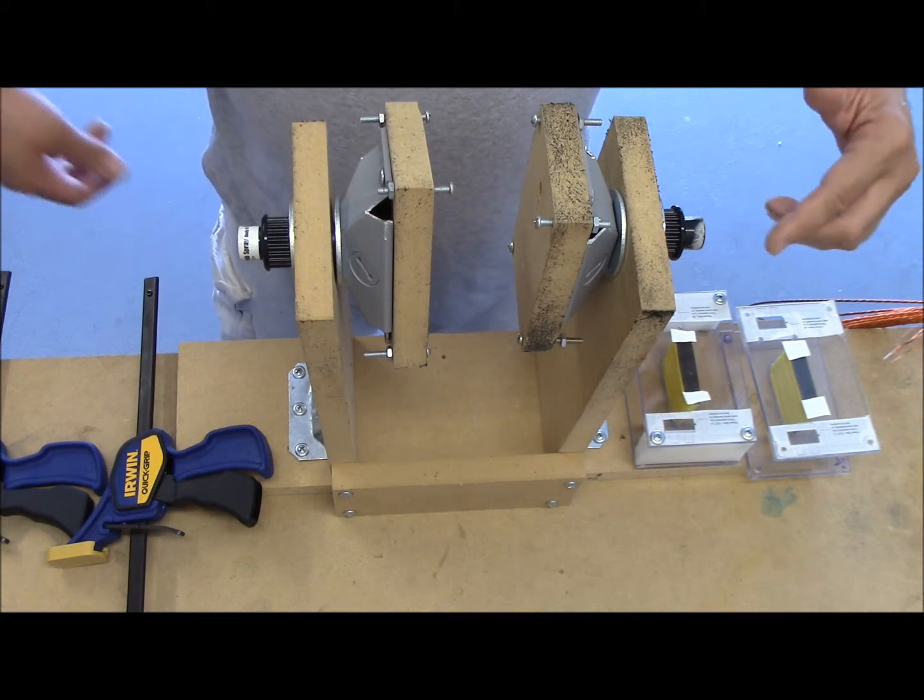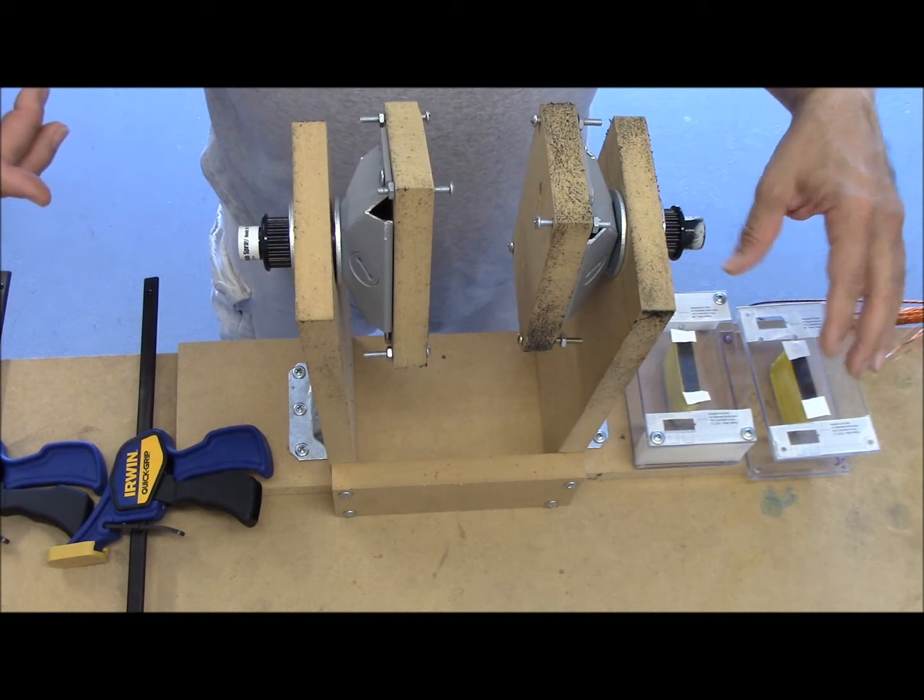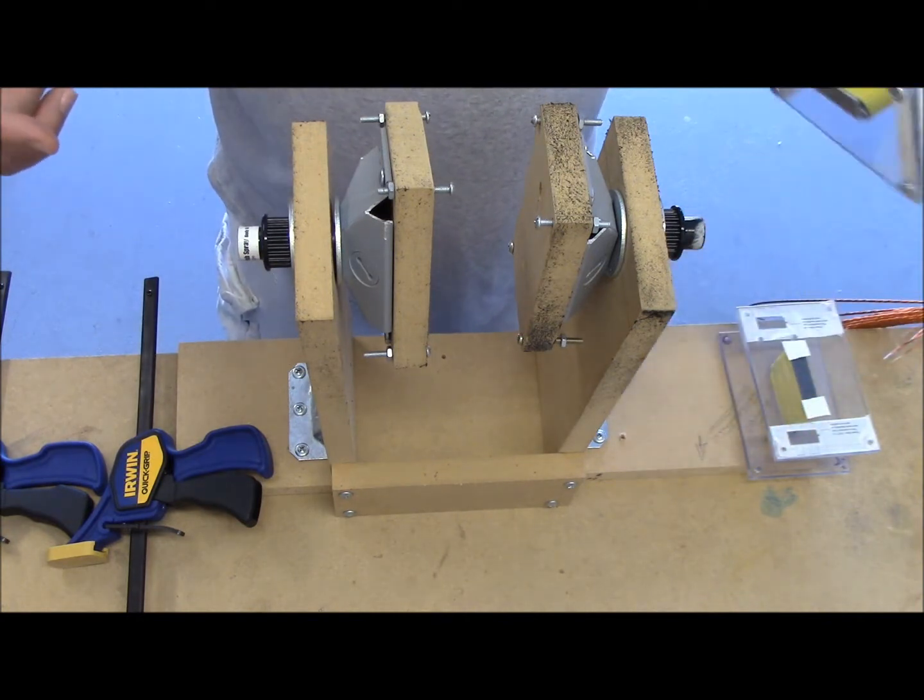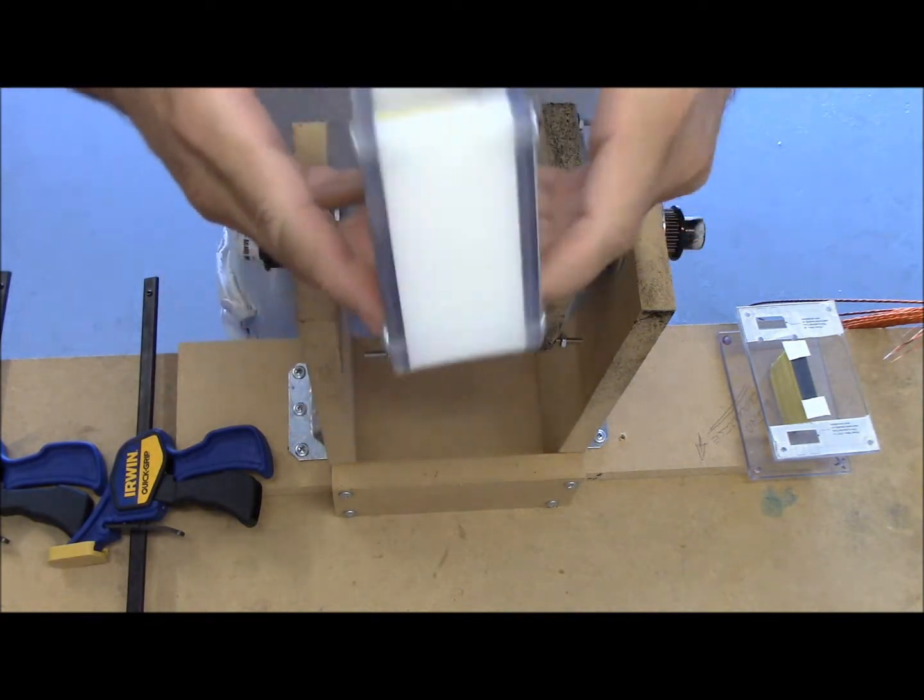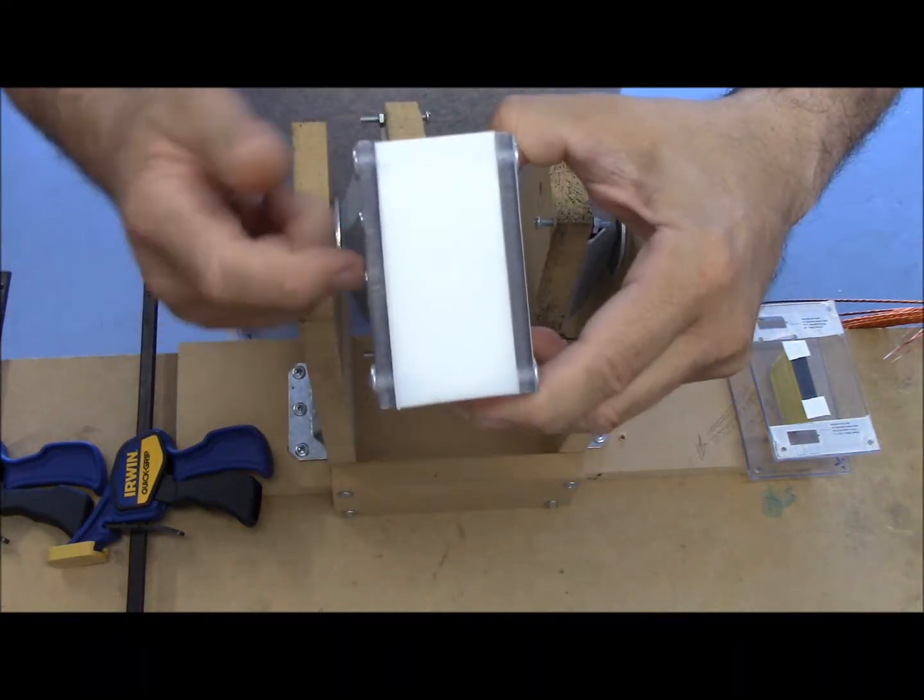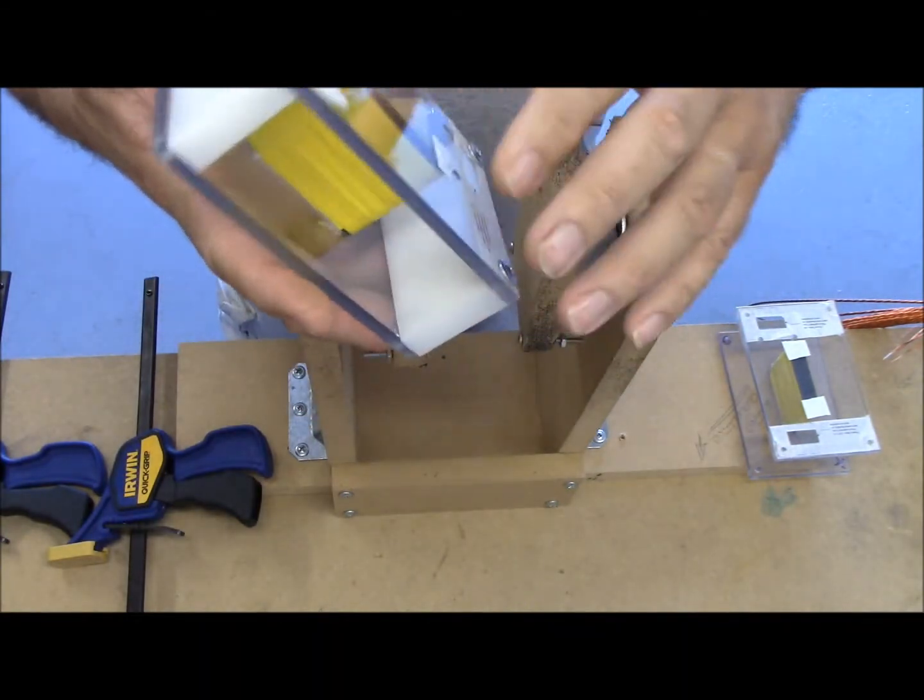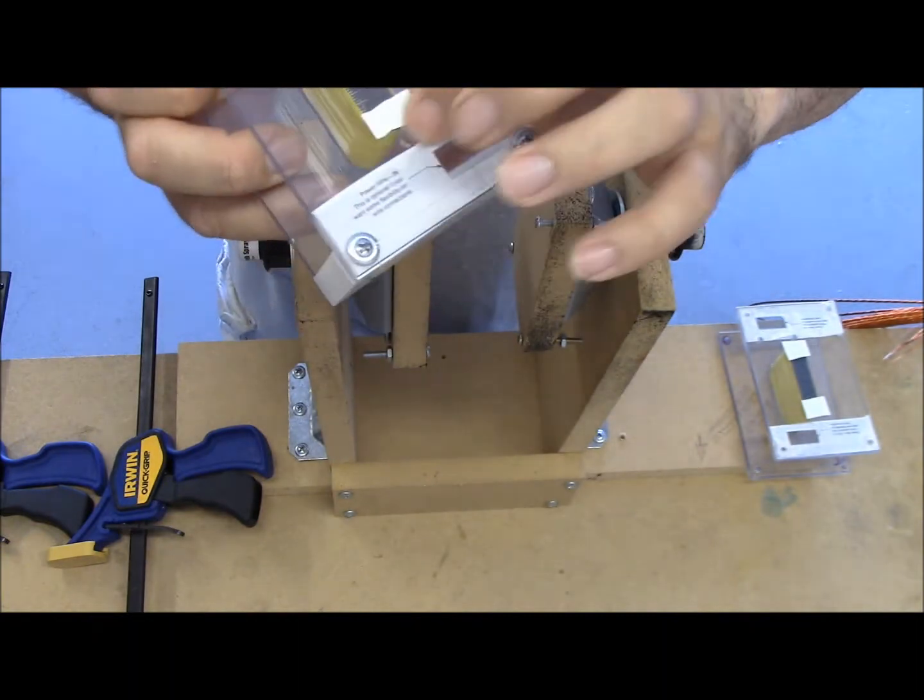I finished cutting all the cores and I'm getting ready to wind my cores. This is what they look like before I take them apart, just like Technomancer. You need to take these off when you get ready to wind them.